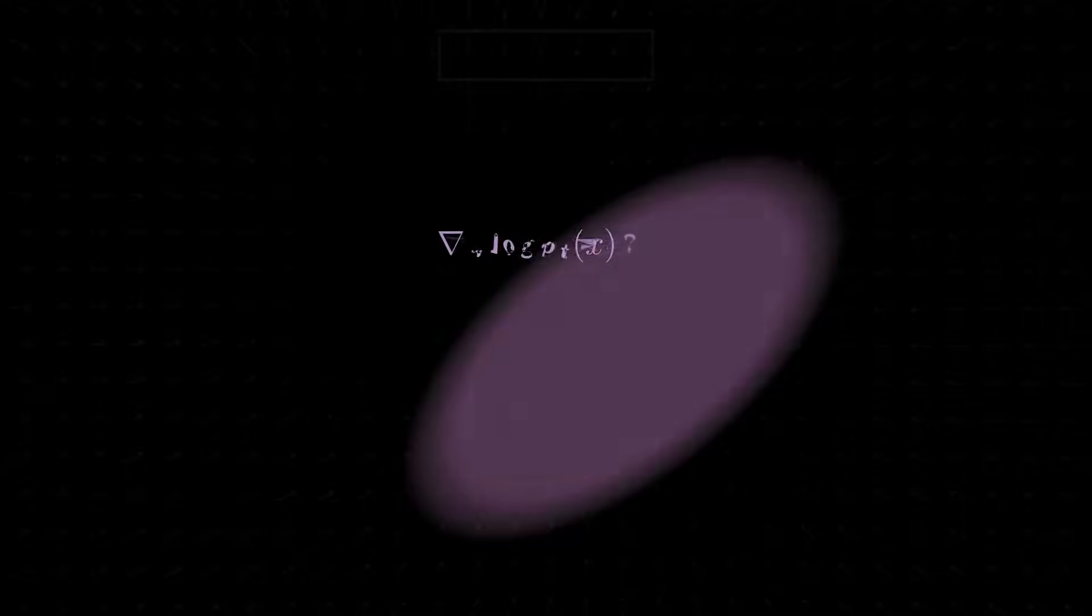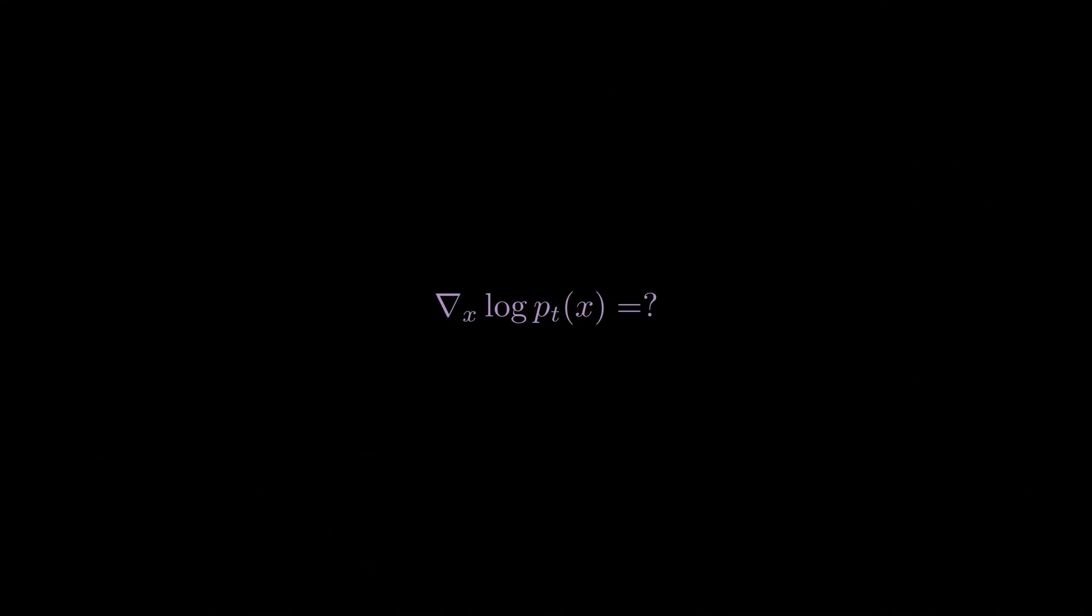To reverse the SDE and be able to generate new samples, we need to know the scores of these intermediate distributions p_t, for every time step, from pure noise back to clean data. Of course we don't know their expressions, so now we'll see how we learn these scores using a neural network.